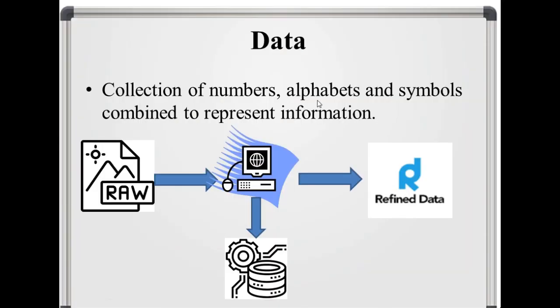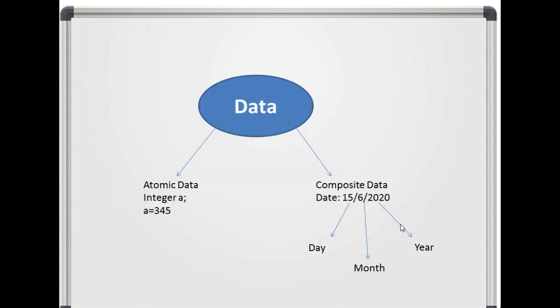Data. What is actually the data? Data is collection of numbers, alphabets and symbols combined to represent the information. Computer takes raw data as input and after processing, it produces refined data.